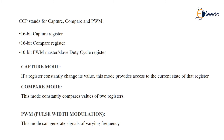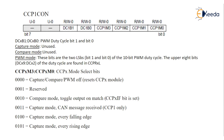PWM — Pulse Width Modulation — this mode can generate a signal of varying frequency and duty cycle on one or more output pins. The CCP pins are assigned for capture, compare, and PWM purposes. In the CCP module, capture mode uses Timer 1 or Timer 3, compare mode uses Timer 1 or Timer 3, and PWM is assigned to Timer 2.